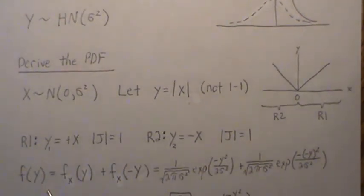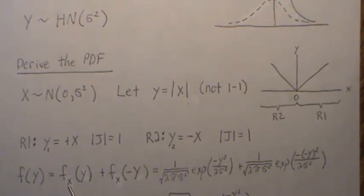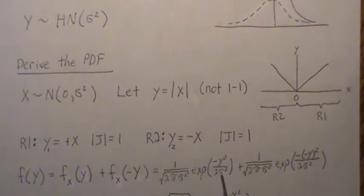So the density for y is really region one, but we plug in x equal y here for the density of f of x, the normal distribution, and then plus region two. So we back solve for x, and x is minus y. And then we plug those into the normal distribution with variance sigma squared.